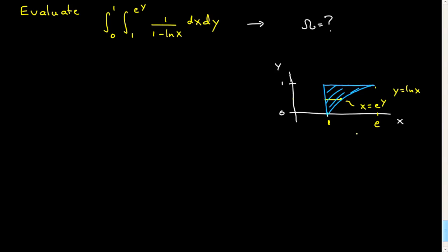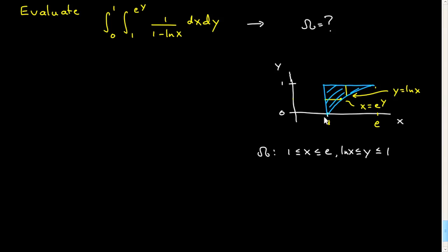So omega as a type 1 integral: x between 1 and e. For every x, I need the range of y. y starts at log x and goes up to 1. You'll always have to do a function inversion here — because I was integrating x at fixed y, my upper bound was x as a function of y. Now I do the integral at fixed x over a range of y, so I need y as a function of x, which is the log.